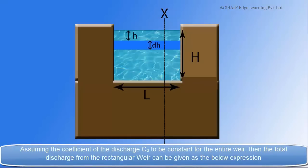Assuming the coefficient of the discharge, cD to be constant for the entire weir, then the total discharge from the rectangular weir can be given as the below expression.